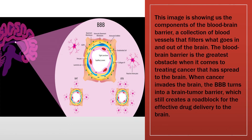This image shows us the components of the blood-brain barrier — a collection of blood vessels that filter what goes in and out of the brain. The blood-brain barrier is the greatest obstacle when it comes to treating cancer that has spread to the brain. When cancer invades the brain, the blood-brain barrier turns into a brain tumor barrier, which still creates a roadblock for effective drug delivery to the brain.